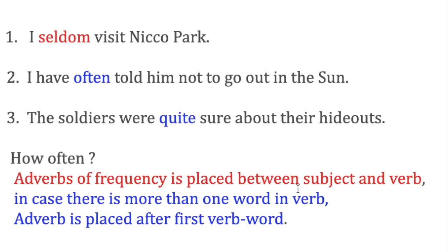In sentences with a helping verb, the adverb of frequency is placed after the helping verb and before the main verb. So in 'I have often told him,' the helping verb is 'have,' and 'often' comes after 'have' and before 'told,' the main verb. That is the rule we follow.